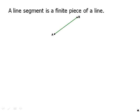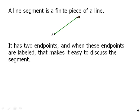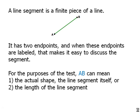A line segment is a finite piece of a line. So for example, here we have a line segment. It has two endpoints. And when these endpoints are labeled, that makes it easy to discuss. This is line segment AB. And for the purpose of the test, AB can either mean the actual shape, the line segment itself, or it can mean the length of the line segment, the numerical length.